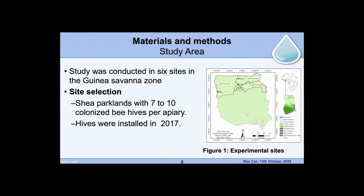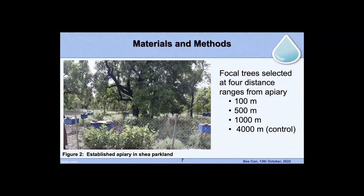In Ghana, Shea is limited to the Guinea savannah zone — mainly grassland with only the Shea trees as the main trees. Within the Shea Parkland, we established in 2007 hives and apiaries in the parklands. The experimental sites were chosen where at least seven to ten colonized bees per apiary were present. Focal trees were selected at four distances from the apiary: 100 meters, 500 meters, 1,000 meters, and 4,000 meters as a control.